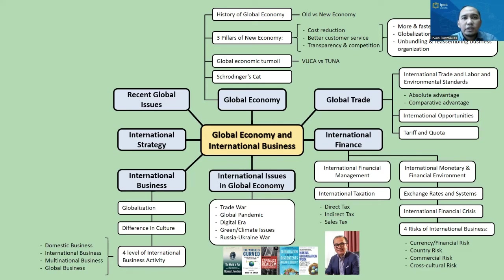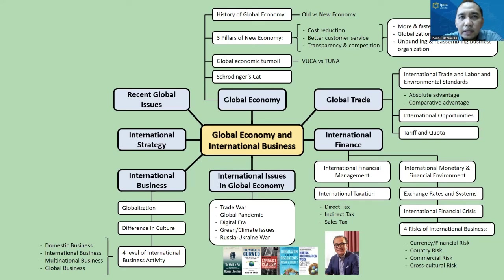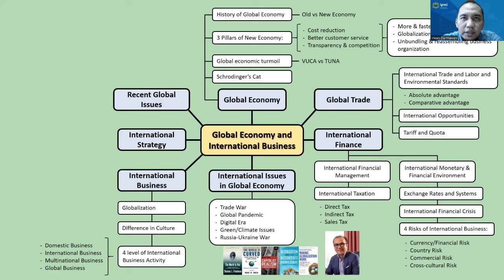The next subject is about international business, which includes discussion about globalization and how cultural differences can affect international business activity, because different cultures can give different perspectives and perceptions. For example, cricket is considered a pest in the US and China, while in Thailand it's a snack. We also learn about four levels of business activity, where the lowest level is called domestic business, which only occurs in a single country. Then international business, where the main business is still in one country but occasionally gets resources or revenue from other countries.